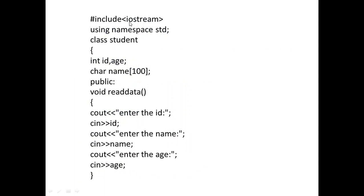Let's look at a simple example of how a class works. Suppose we have to store the ID, age, and name of 50 students. We create a class with the keyword 'class' and name it 'student'. Inside it, we declare the ID and age. We also declare the functions as public — since they are public, they can be accessed outside the class. There is a function 'void readData' that reads the ID, name, and age using cin, and another function 'void display' that outputs the ID, name, and age each on a new line.